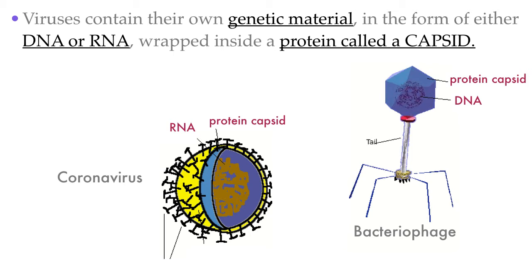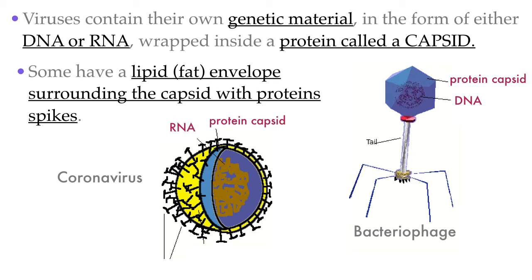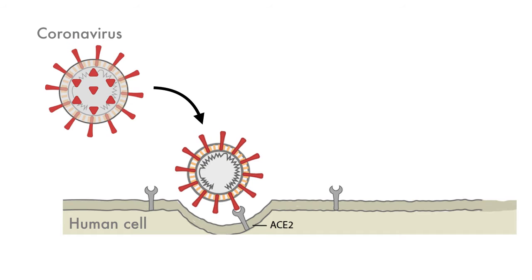Some viruses also have a lipid or fat envelope that surrounds the capsid and contains protein spikes. In the coronavirus, we can see this lipid envelope in yellow with little protein spikes all around it. These protein spikes serve a variety of functions, but one very important function is that they act as keys allowing the virus to enter cells. The coronavirus's protein spikes attach perfectly to receptors on the surface of human cells, tricking the cell into letting the virus in.